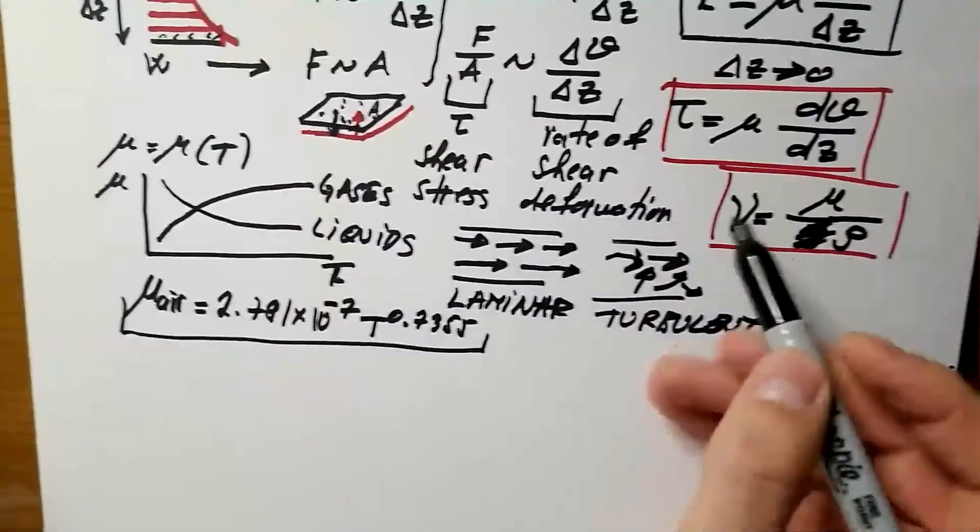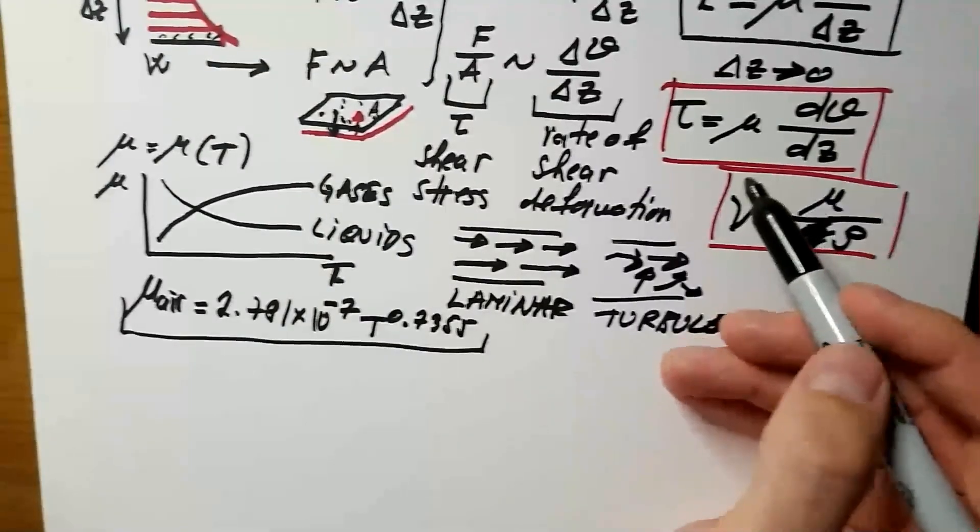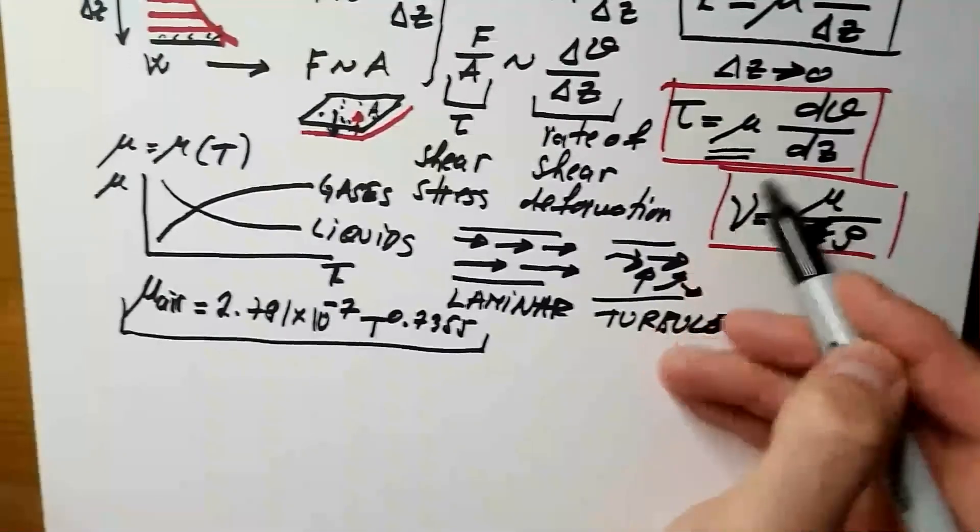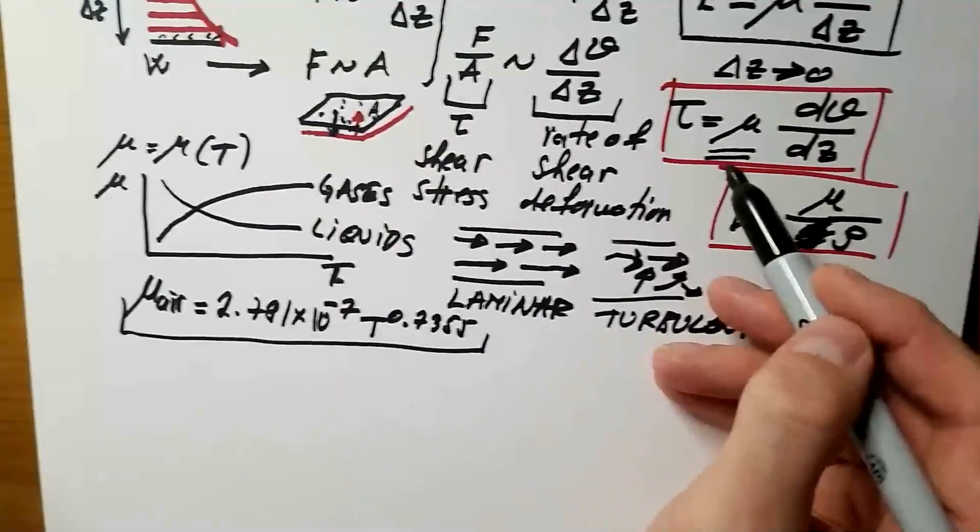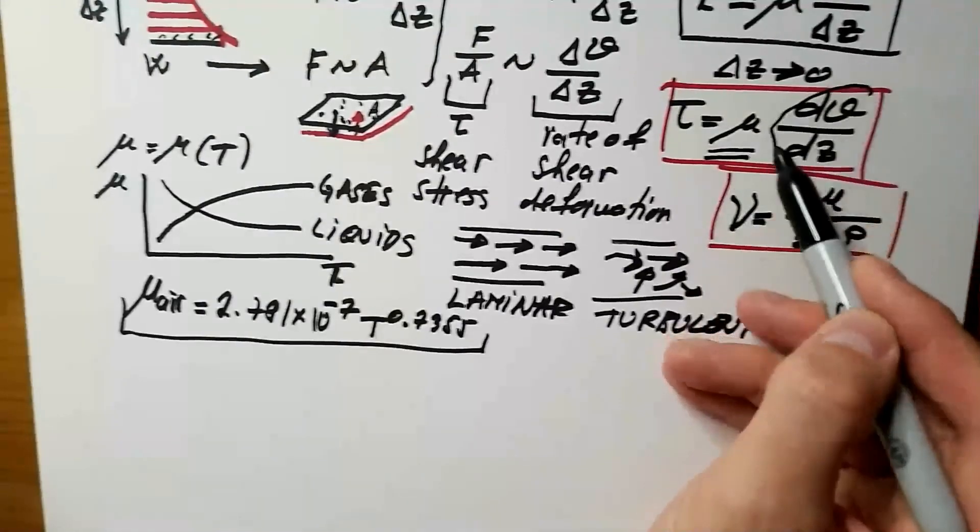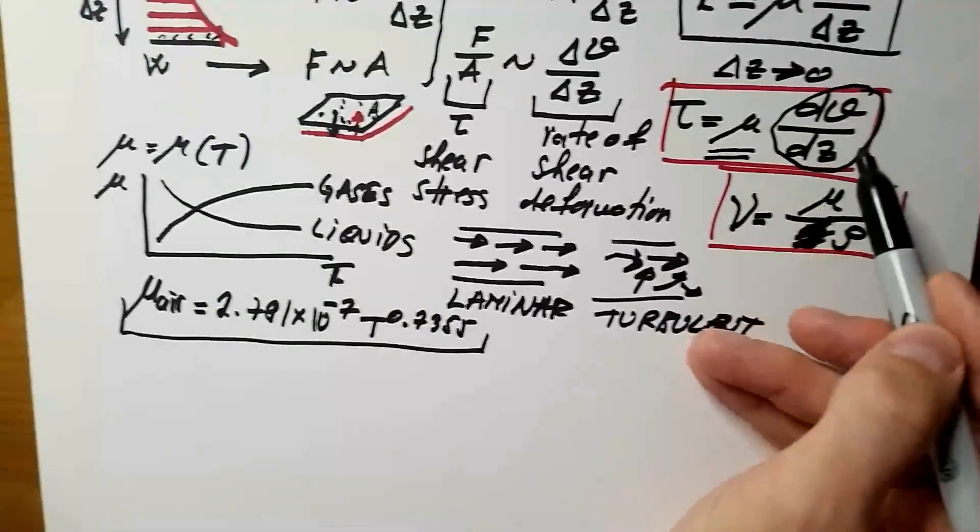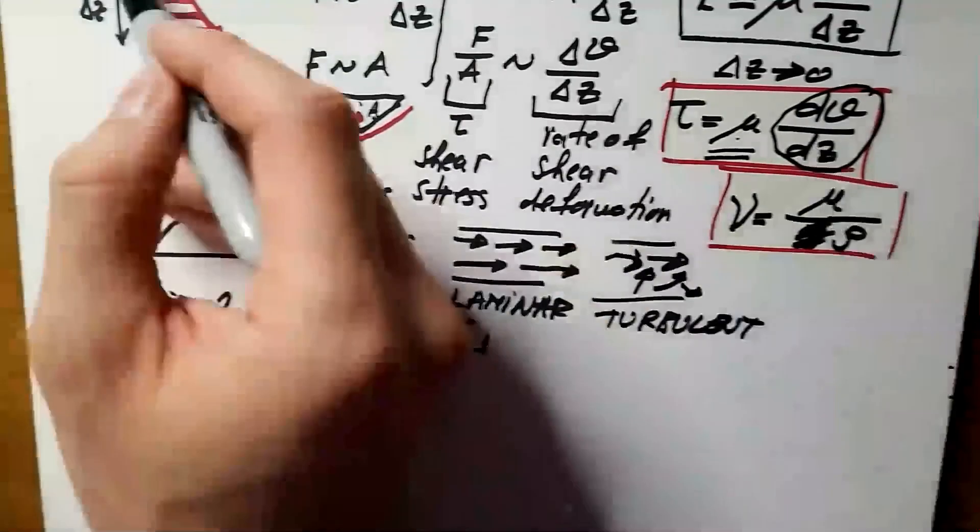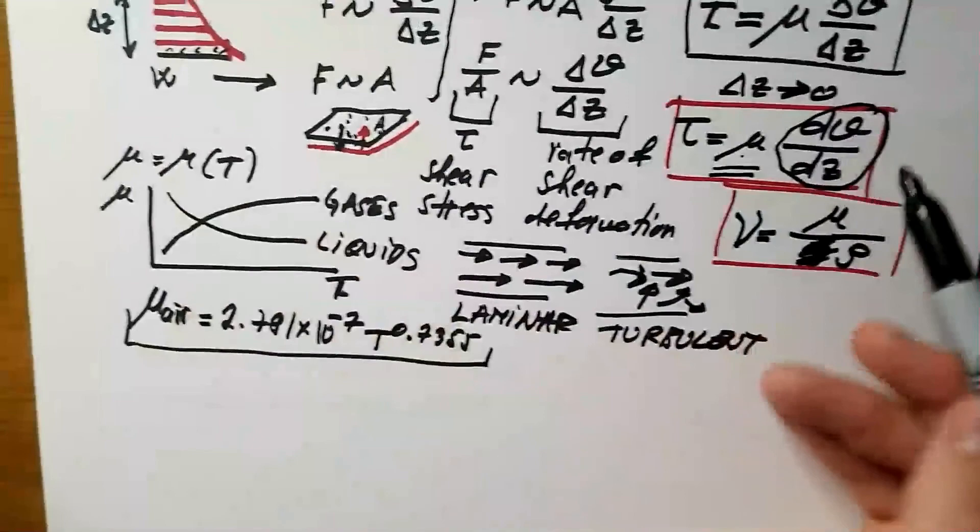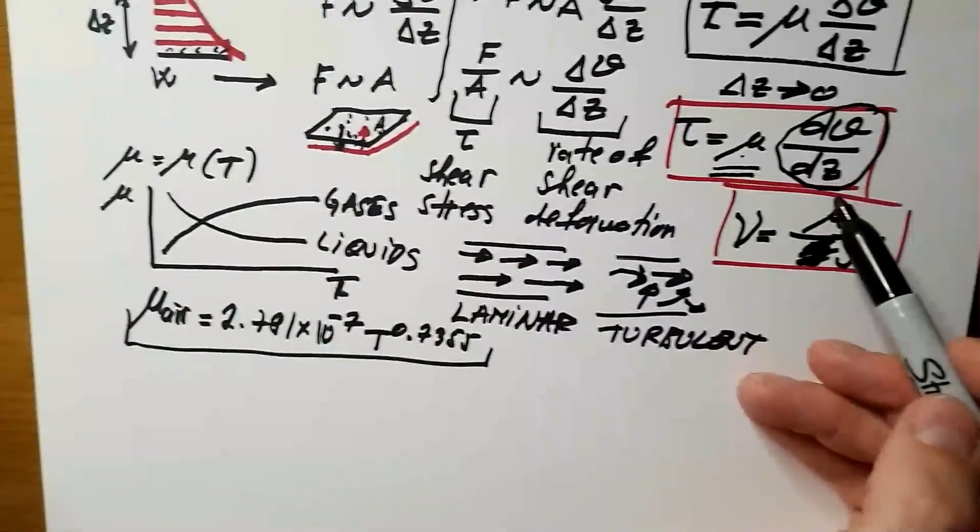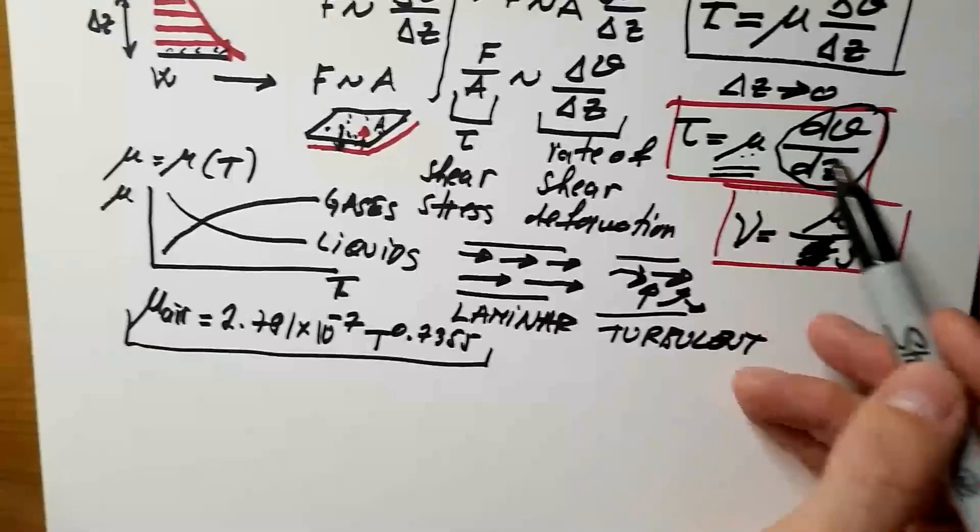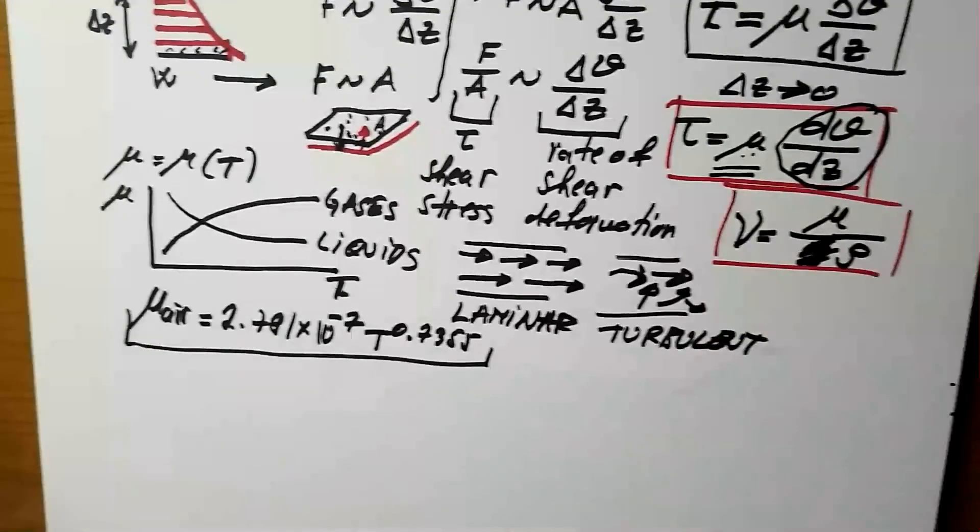Maybe I can also say something that will be introduction for the next video, actually. This mu in certain fluids is actually a function of this rate of shear deformation. If this happens, that mu depends on how we shear the flow, then these types of fluids are called non-Newtonian fluids. If mu is constant and doesn't depend on this, then these are Newtonian fluids.